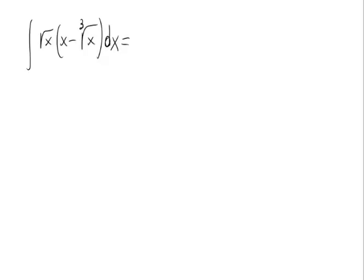Let's calculate the integral we see on the screen. We have to calculate the integral of the square root of x times x minus the cube root of x. For calculating this integral, we're just going to use the following formula: the integral of x raised to n is equal to x raised to n plus 1, divided by n plus 1, plus c, where c is from the set of real numbers. This formula can be applied always if n is different from minus 1.